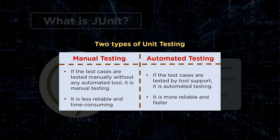Manual testing is less reliable because you are dependent on a particular tester who can perform testing according to their efforts, and it's quite time consuming — you can only run test cases for probably 8 to 9 hours per day. Automated test cases, on the other hand, are quite reliable because they do not depend on a human requirement, so they can be run 24x7. Anytime you can run those test cases, which makes them much faster compared to any manual testing approach.